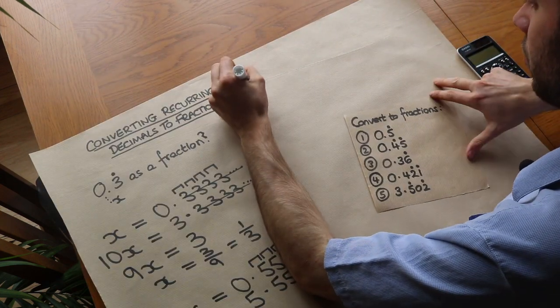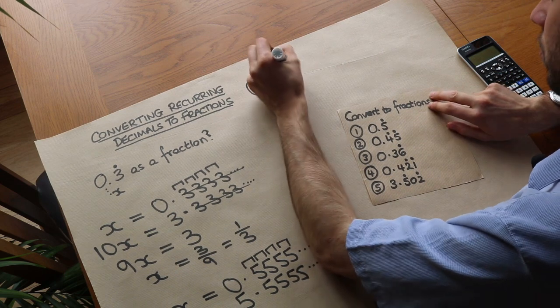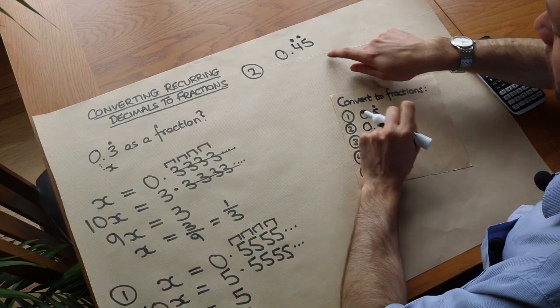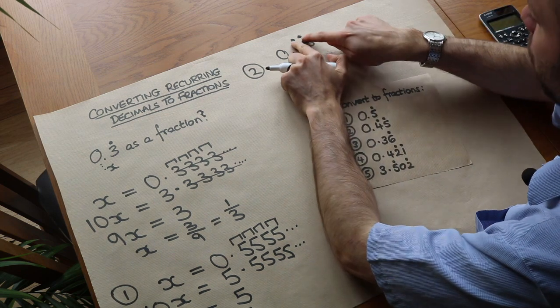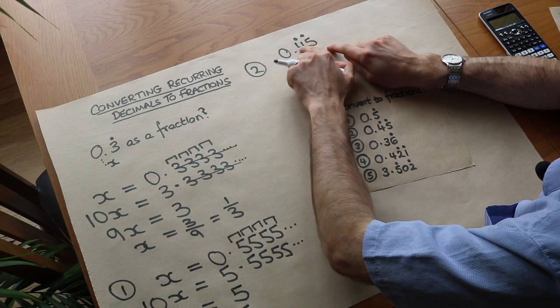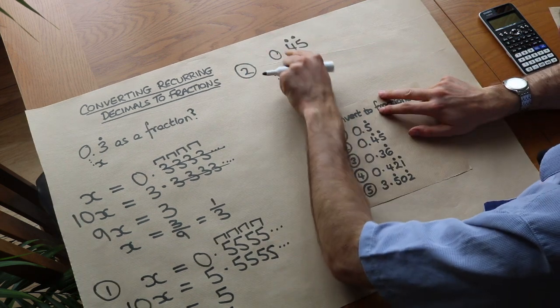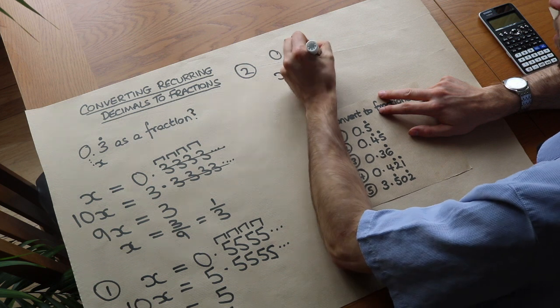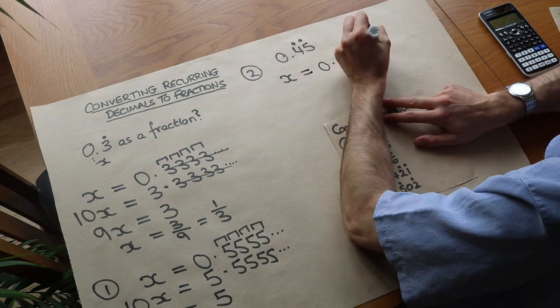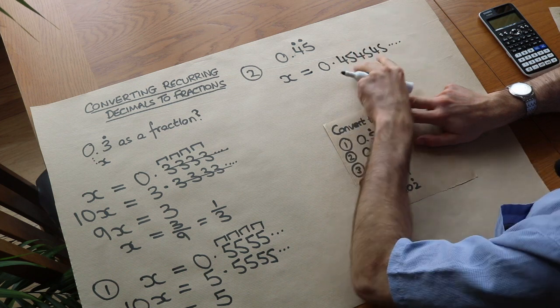Right next one. Now we have two digits which are recurring. So we've got 0.45 recurring. Well what does that mean? That means that the digits are repeating between the two dots. It goes 4, 5 and then it goes back to the first dot again. So 4, 5, 4, 5 repeating. So if we make that x, x is equal to 0.454545 etc. Let's just repeat it a few times.